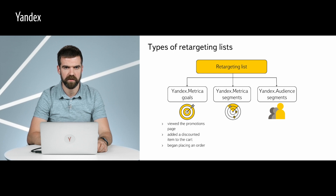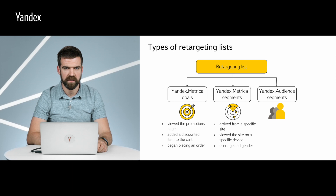You might have noticed this yourself — you visit an online store, view certain items, and then see those items appear in ads, reminding you about the items you left in your cart. Second, you can use Yandex Metrica to create retargeting lists based on age, gender, device, and the site the user arrived from. There is also the new Yandex Audience service — you can upload your own data from your CRM system, such as a list of email addresses, and Yandex Audience will match them with Yandex's internal data. You can then create a segment to target your own previous customers. If you are interested in goals or segments in Yandex Metrica, contact your personal manager or the customer service department and we will help you get started.